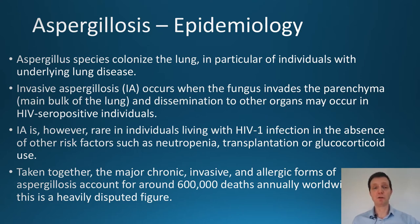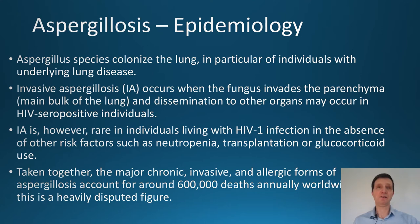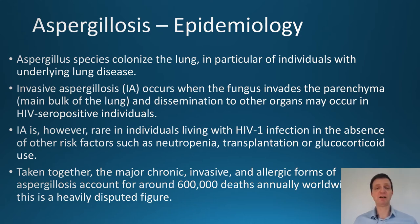Invasive aspergillosis usually occurs when the fungus invades the bulk of the lung and then disseminates through other organs. It can occur in HIV positive individuals, but is also common in HIV negative individuals — for example, transplant recipients, those with a low blood count, or those using steroids. Overall, it is reckoned that up to 600,000 people annually worldwide have actually died of some form of aspergillosis.